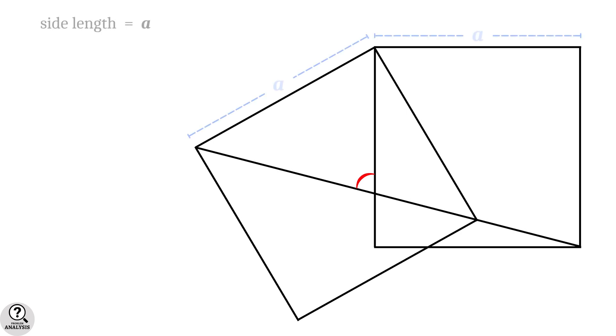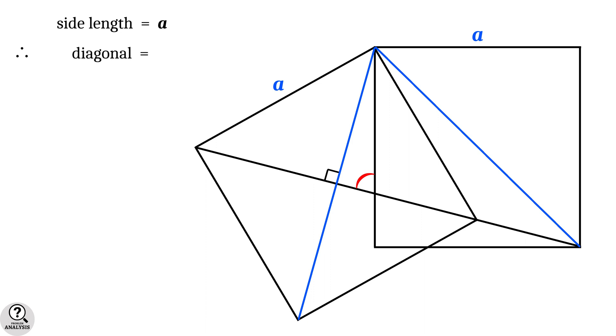So first suppose the side length of one square is a units. Then the diagonals will be a root 2 and therefore the half diagonal length will be a root 2 by 2.